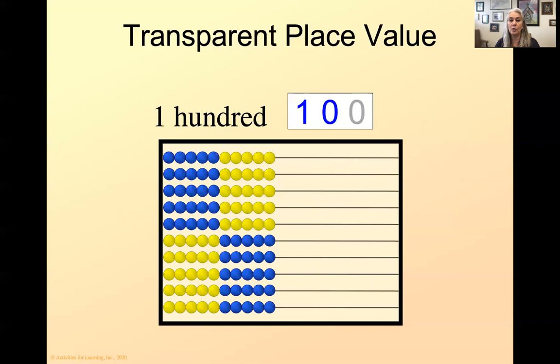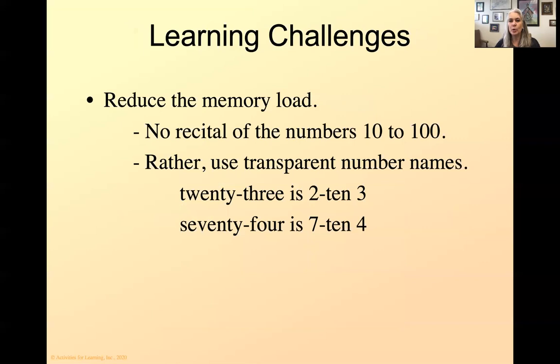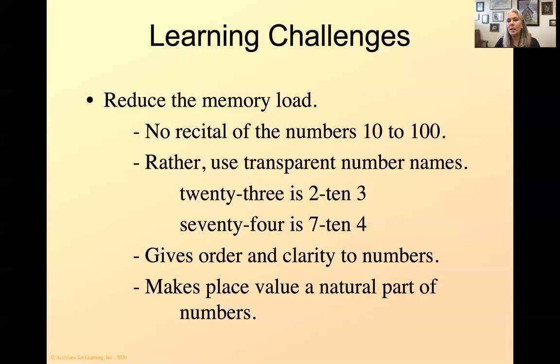So we want to reduce the memory load. We're not just going to recite the numbers from 10 to 100, but rather we're going to use transparent number names. So 23 becomes 2-10-3 and 74 becomes 7-10-4. This gives the order and clarity to the numbers and it makes place value a natural part of the numbers. How many tens are in 7-10-4? You can hear it. It's right there.